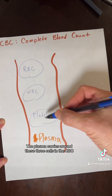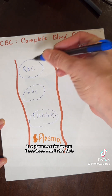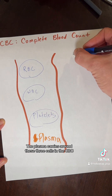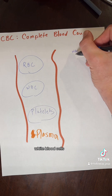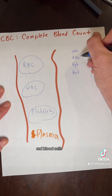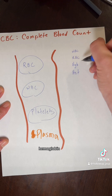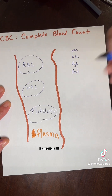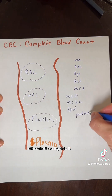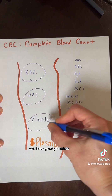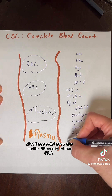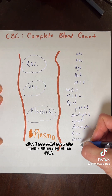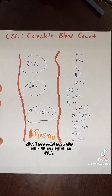So the plasma carries around these three cells. In the CBC, let's write out all the components: white blood cells, red blood cells, hemoglobin, hematocrit — this other stuff we'll get to — and your platelets. All of these cells make up the differential of the CBC.